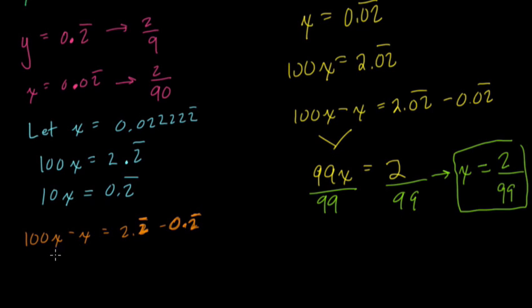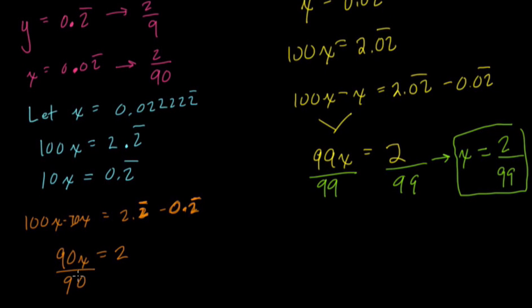So here 100x minus 10x, that's 90x. And 2.2 repeating minus 0.2 repeating is just 2. Solve for x by dividing by 90. And then there we have it, x equals 2 over 90.